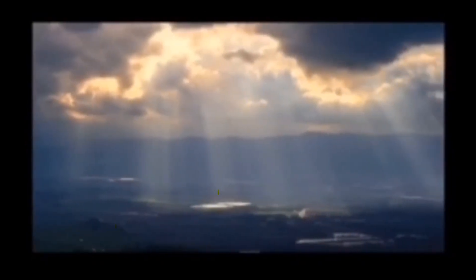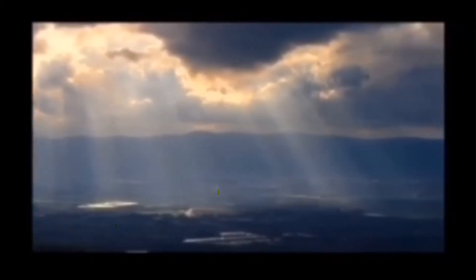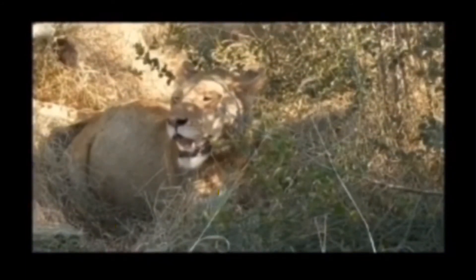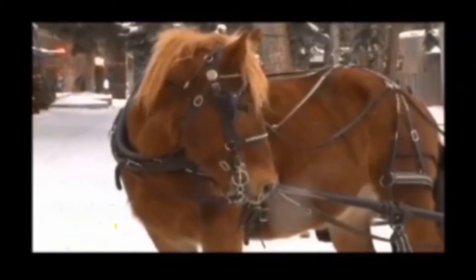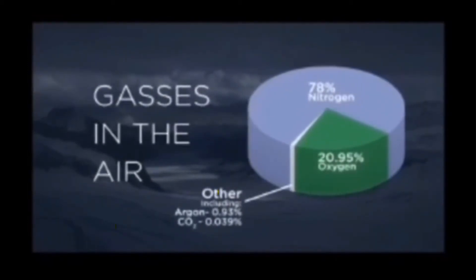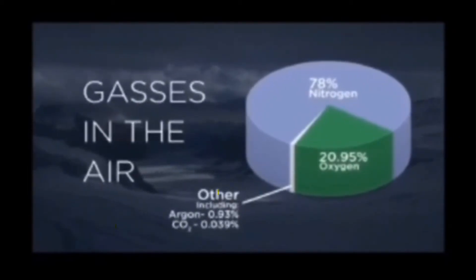The atmosphere serves many functions. One of the main functions is that it protects us from UV radiation and holds in heat to warm the planet's surface. It also contains oxygen and carbon dioxide that all living things need. The pie chart is showing you the combination of gases in the atmosphere.